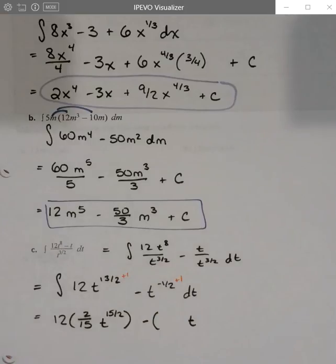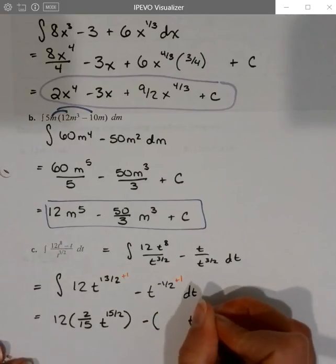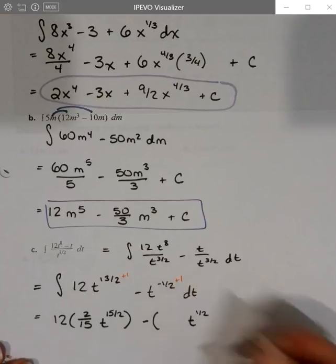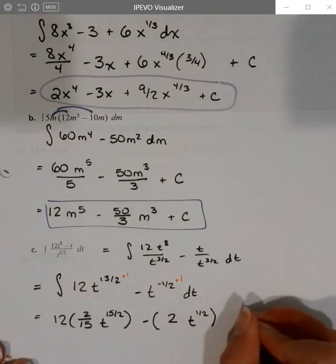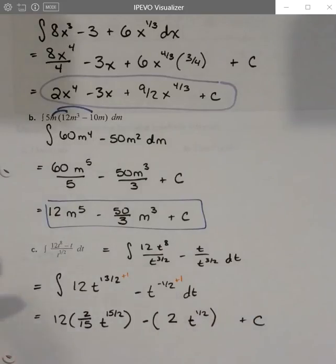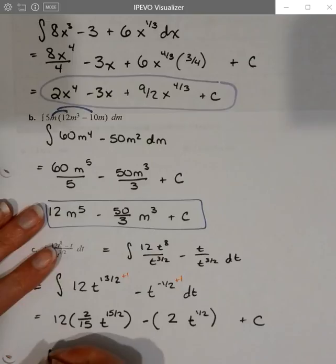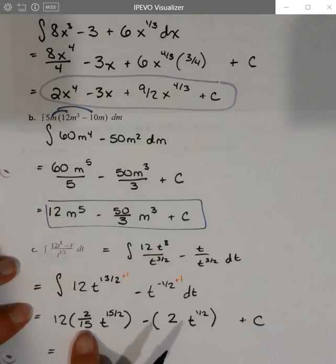And then, so if I take, add 1 to the power, negative 1 half plus 1 is positive 1 half. And so if I divide by positive 1 half, the same thing as multiplying by its reciprocal, multiplying by 2, then our plus c. If we get things simplified, we can reduce this by 3.